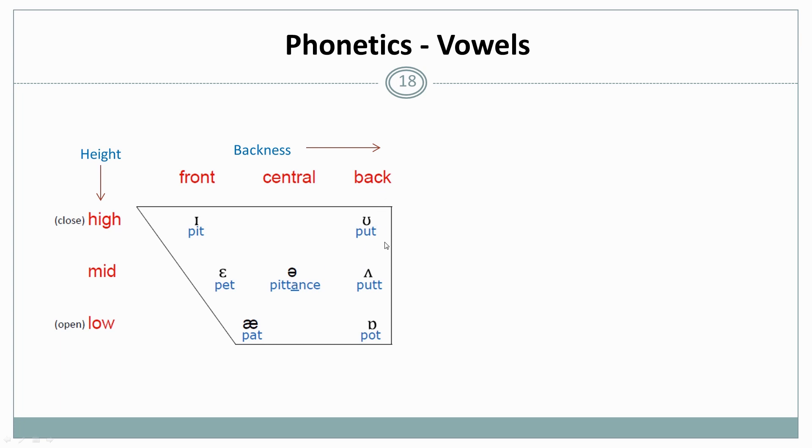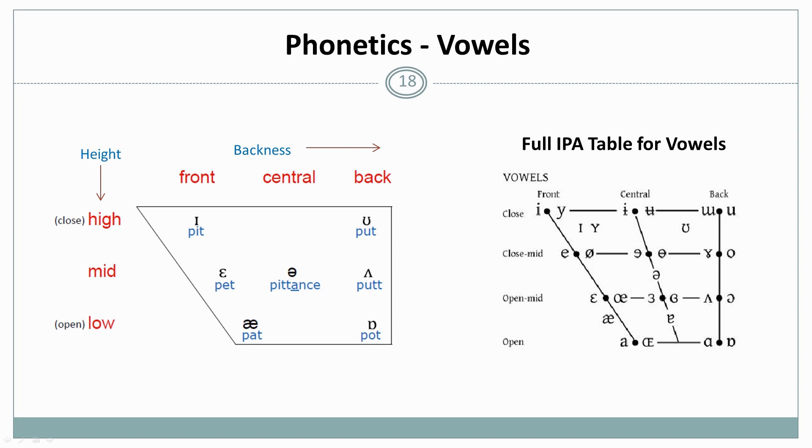And then we have back sounds, the u as in put, the ɔ as in pot, and the ɑ as in pot. So here's the entire IPA table for vowels and you can see that there are sometimes again two sounds at one place.